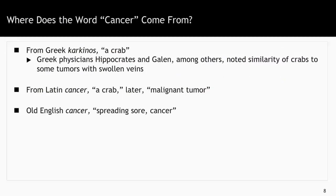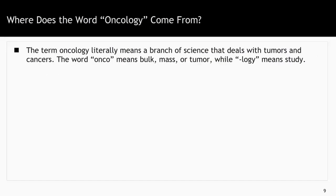Where does the word cancer come from? The origin of the word cancer is from the Greek karkinos, or crab. It was termed this because the Greek physicians Hippocrates and Galen, among others, noted how the cancer looked like a crab, as tumors had swollen veins along the skin. It then evolved into the Latin term cancer, which also means crab or malignant tumor. In Old English, cancer meant spreading sore. The study of cancer is oncology — literally a branch of science dealing with tumors and cancers. The word onco means bulk, mass, or tumor, while logi means study.